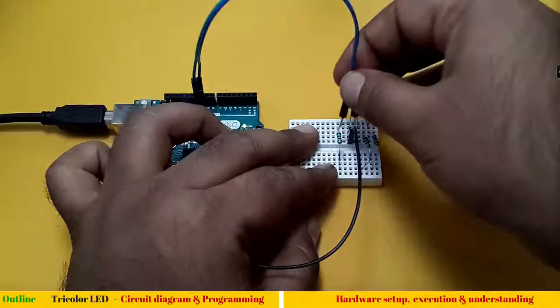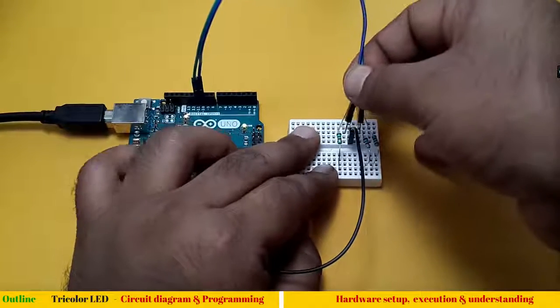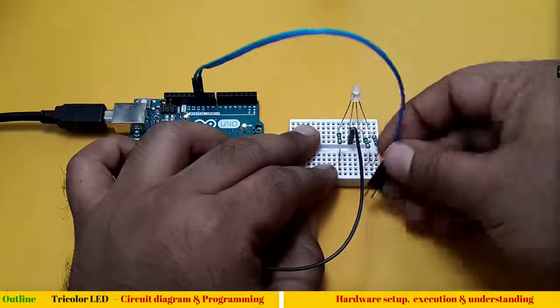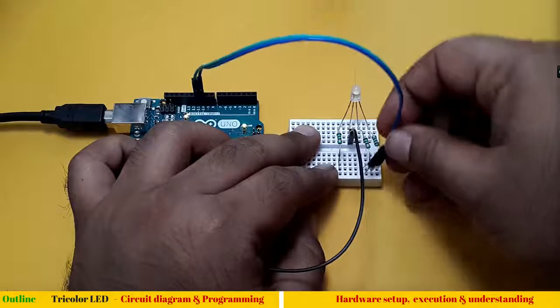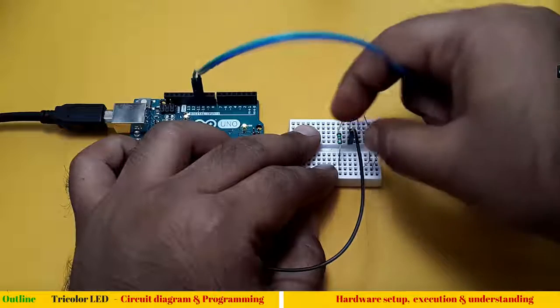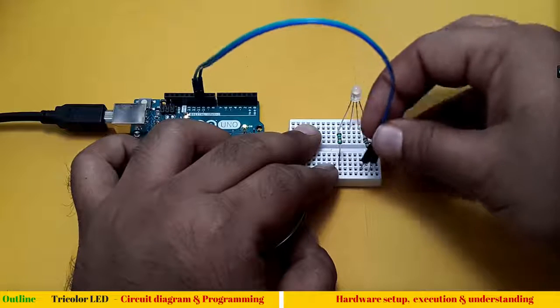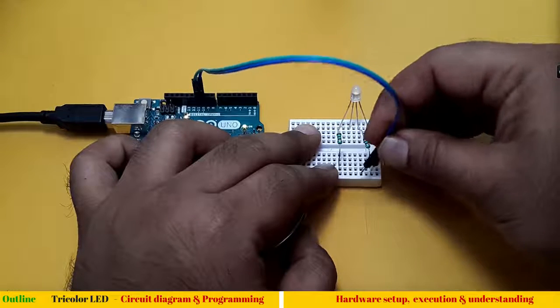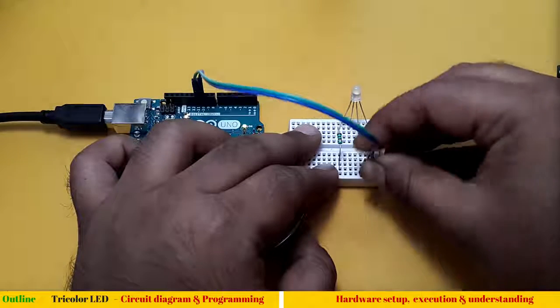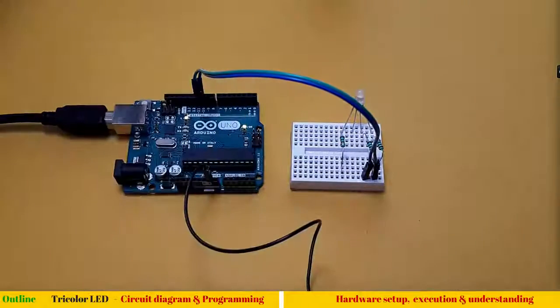All this is true with all the rows you can see or you can say columns. Let us do the remaining connection. I have connected the blue and green wires respectively and here also I will connect them accordingly.